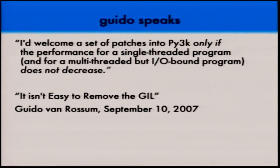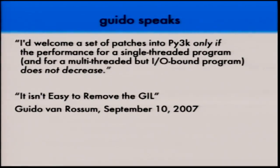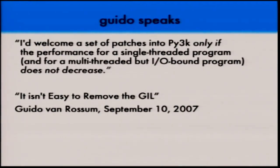Guido wrote a blog post in 2007 saying he would welcome patches to remove the GIL in Python 3 only if performance for a single-threaded program and for a multi-threaded but IO-bound program does not decrease. That's a tall order. It's been almost eight years and nobody has done it — we're not sure how.